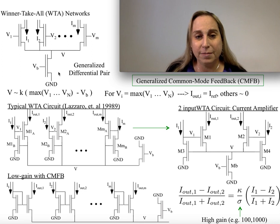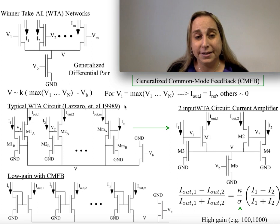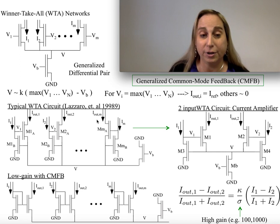The classical structure by John Lazzaro in 1989 is a winner-take-all circuit that many people know and love and work with in many cases, which is effectively this differential pair. But now it allows me to have current inputs I1, I2, to Im, and then I have output currents Iout1 through Ioutm. And this structure turns out to be a very nice high-gain structure, and therefore allows me to do comparisons directly in the current.